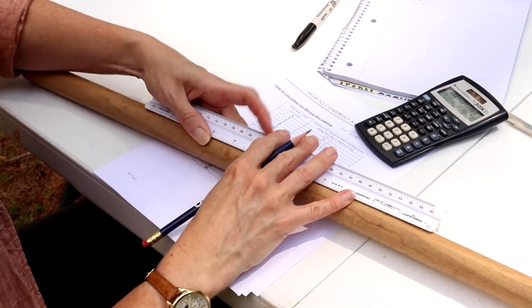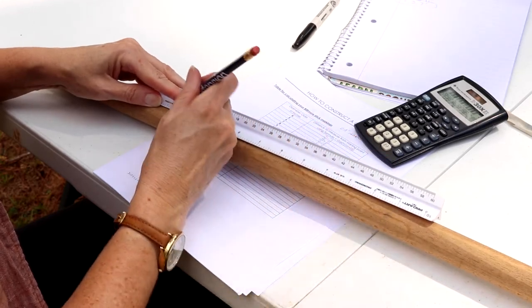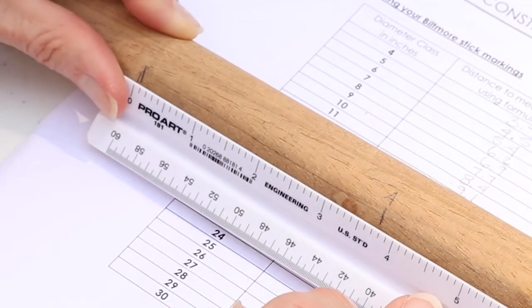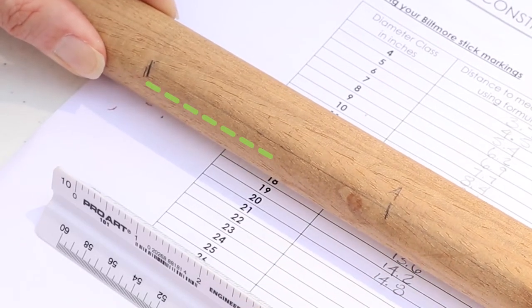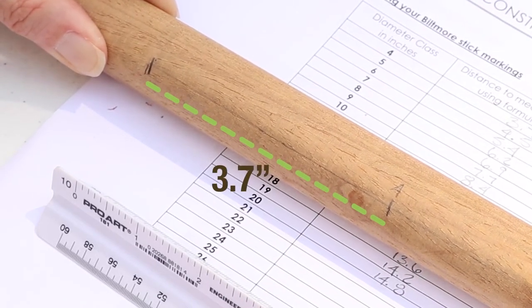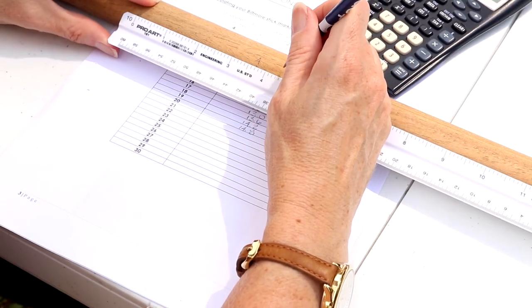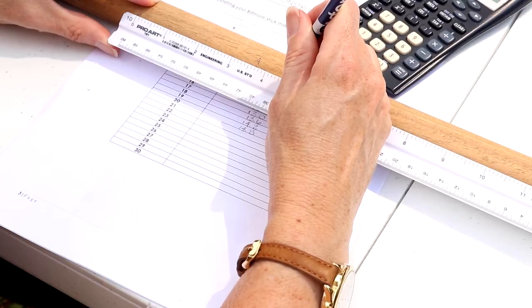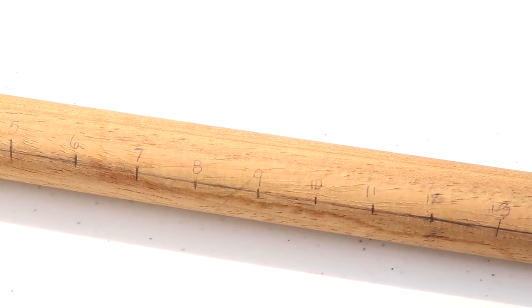Then, measuring in inches and tenths of inches from the starting point, mark the appropriate number of inches for your 4 inch tree. For example, if your 4 inch tree calculation was 3.7 inches, you would measure 3.7 inches from the starting point. Then, for your 5 inch tree, you would repeat this process marking 4.5 inches from your starting point. Continue this process labeling each mark as you go until all diameter markings are complete.